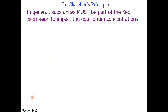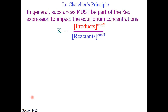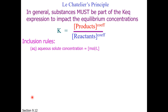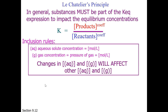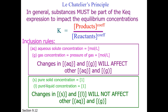In general, substances must be part of the equilibrium expression to impact equilibrium concentrations. K equals products raised to their coefficients over reactants raised to their coefficients, but there are inclusion rules. We may include aqueous solutes in molarity and gas concentrations as pressure or moles per liter. Changes in aqueous and gaseous materials will affect other aqueous and gaseous materials. However, pure solids have an activity of 1, and pure liquids such as the solvent also have an activity of 1, so changes in solids and liquids will not affect other aqueous and gaseous materials.